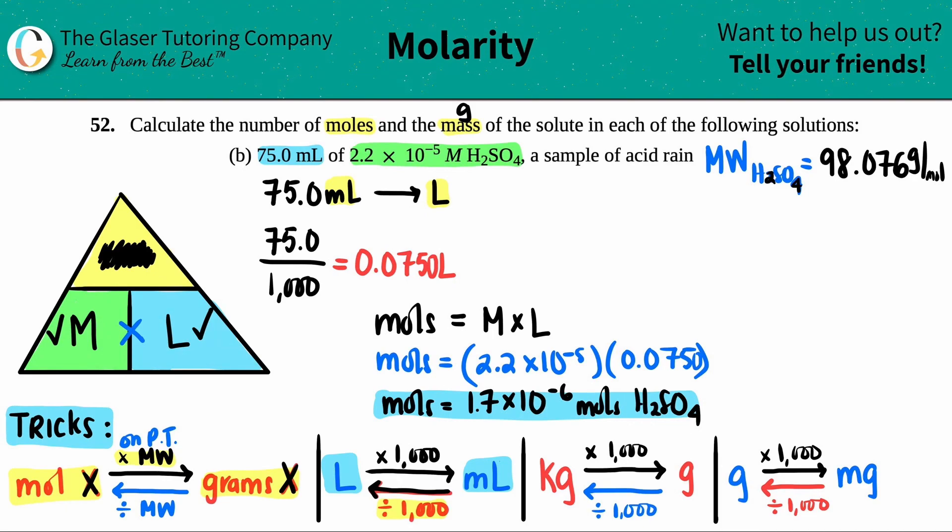Now what did we say? We take the moles we had and multiply it by the molecular weight, and I will get grams. The moles is 1.7 times 10 to the negative 6, and all I have to do is multiply by the molecular weight that was found on the periodic table, 98.076. That's going to be the grams. If I keep the units in here, this was a mole value. I'm multiplying by a molecular weight which has units of grams per mole. Look what happens—the moles, one's on top, one's on the bottom, they cancel. That's why you're only left with the unit of grams.